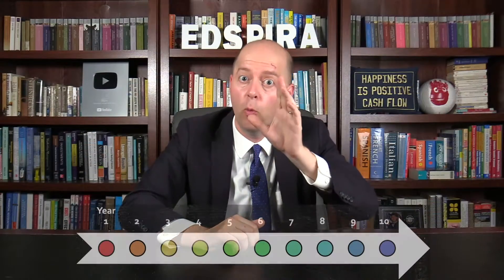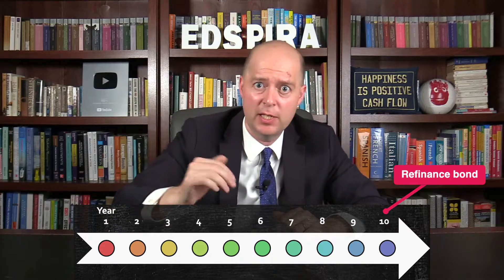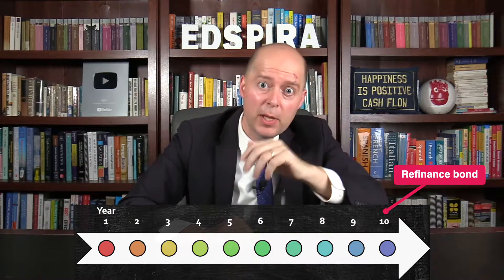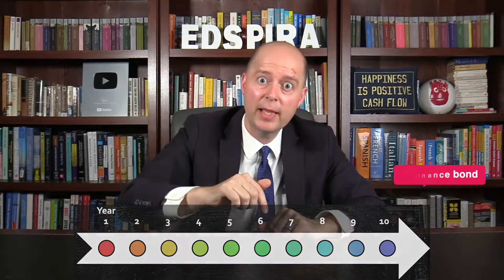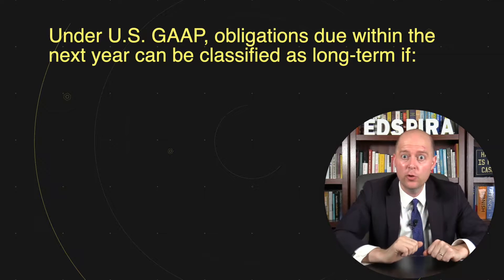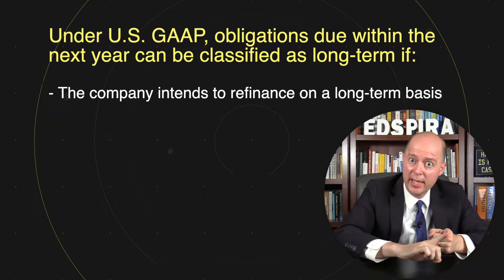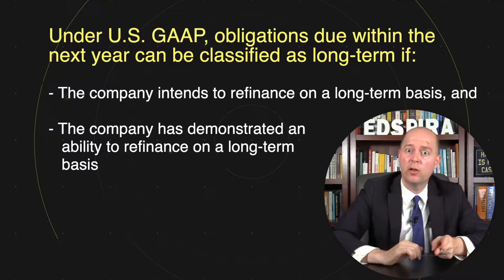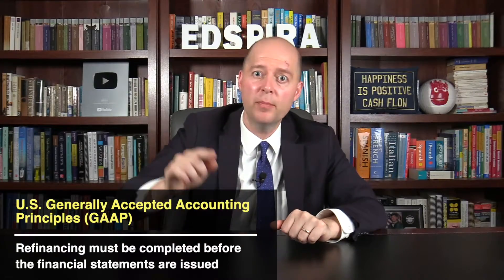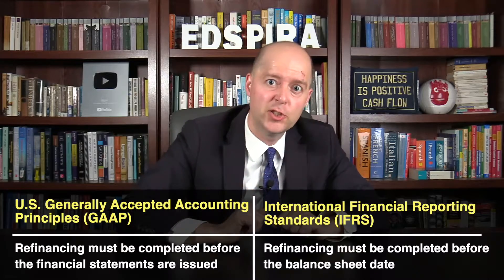But returning to our example, what if the company intends to refinance the bond in year 10 by issuing another 10-year bond? In that case, the company might be able to classify the bond as long-term in year 10, even though the bond is coming due that year. Under US GAAP, obligations due within the next year can be classified as long-term if the company intends to refinance on a long-term basis and has demonstrated an ability to do so, and the financing must be completed before the date that the financial statements are issued. Under IFRS, the refinancing must be completed before the balance sheet date.